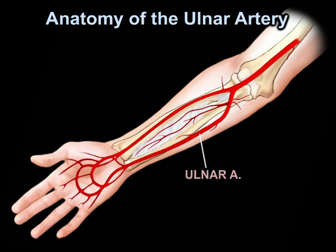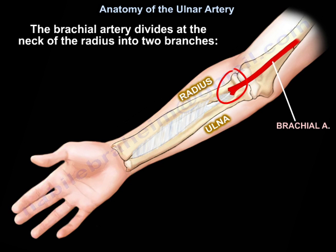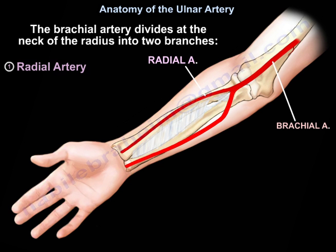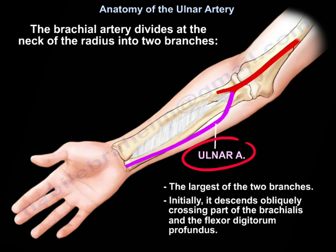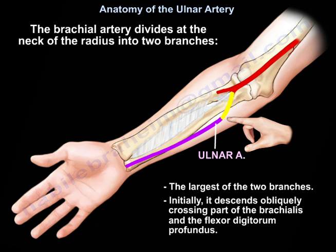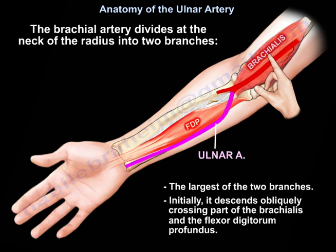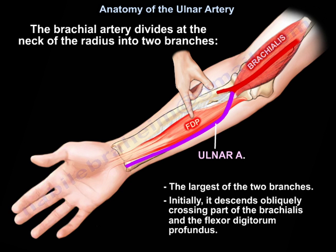The brachial artery divides at the neck of the radius into two branches: the radial artery and the ulnar artery. The ulnar artery is the largest of the two branches. Initially, it descends obliquely, crossing part of the brachialis and the flexor digitorum profundus.